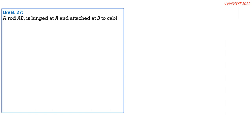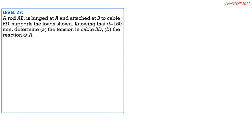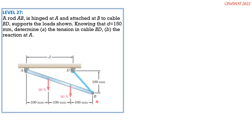A rod AB is hinged at A and attached at B to cable BD, supporting the load shown. Knowing that D is 150 mm, determine the tension in cable BD and the reaction at A. Denote the tension in BD as T. The angle the cable makes with the vertical is arc tan(150/100) = 56.31 degrees. By the principle of transmissibility, T is transferred to B with components T cos 56.31° (vertical) and T sin 56.31° (horizontal).